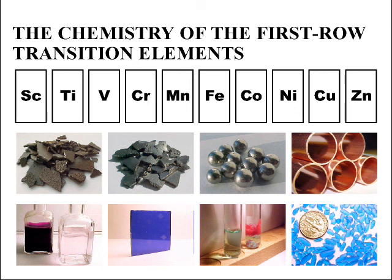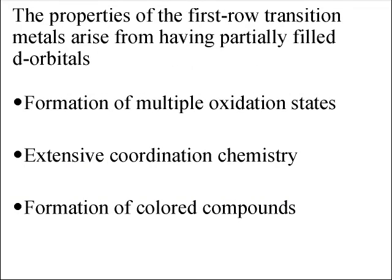In this video we will explore the descriptive chemistry of some of the first row transition elements: common oxidation states, minerals, aqueous chemistry, and the ways you test for the various metal ions. The properties of the transition metals are very different from those of the main group metals. Some of the differences include the formation of multiple oxidation states, extensive coordination chemistry, and the formation of colored compounds. All of these properties arise from the transition metals having a partially filled set of d orbitals.